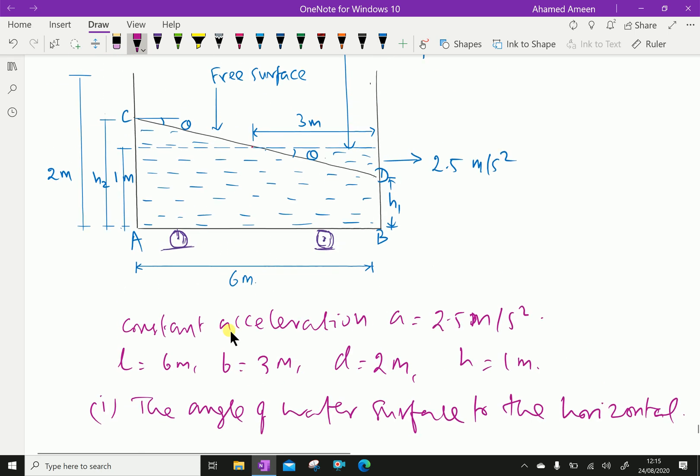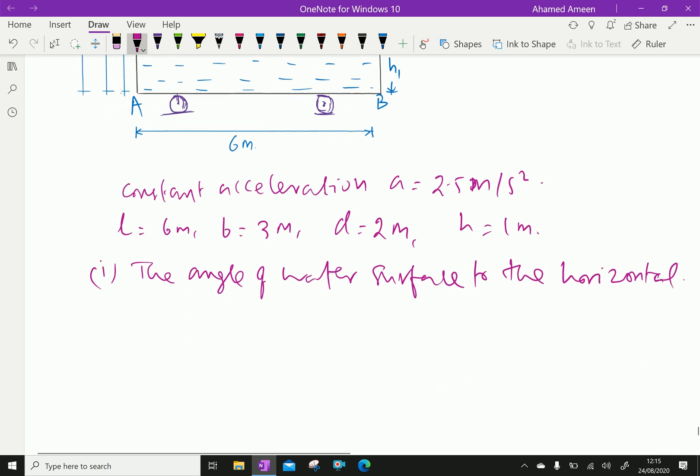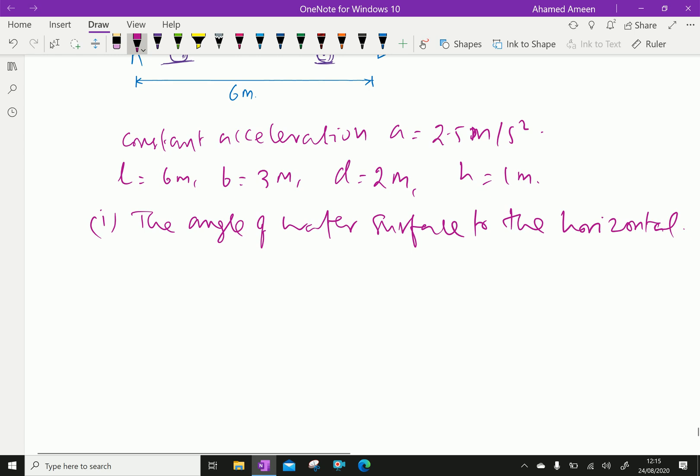Due to the tank moving with a constant acceleration of 2.5 meters per second squared, the water surface becomes inclined. This angle is given by tan theta equal to minus a over g, minus 2.5 over 9.81, which gives minus 0.2548.